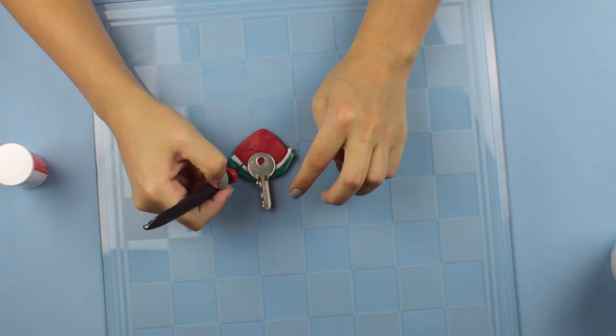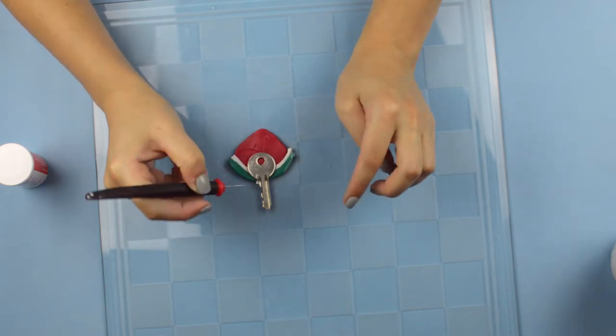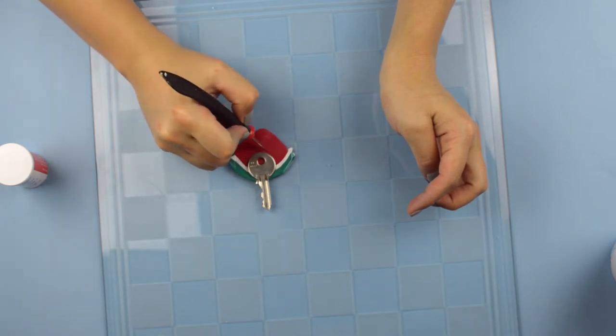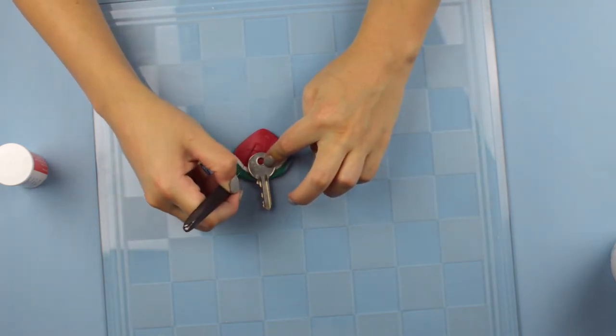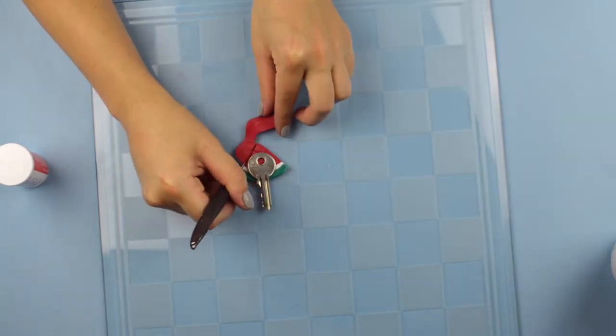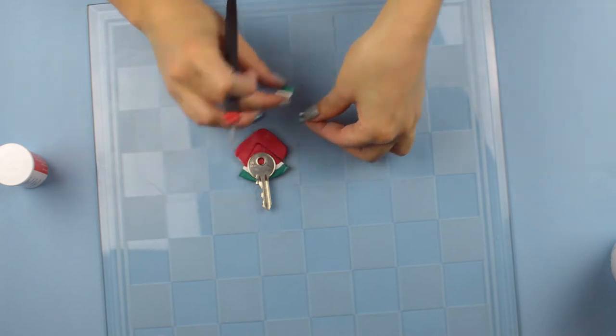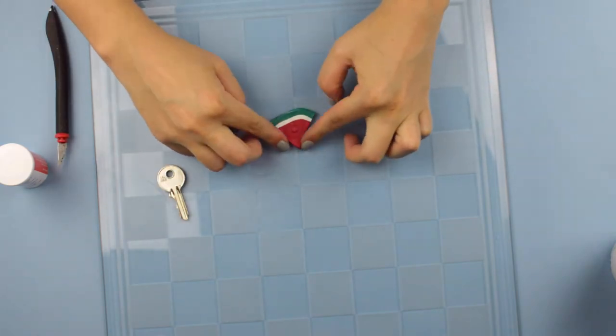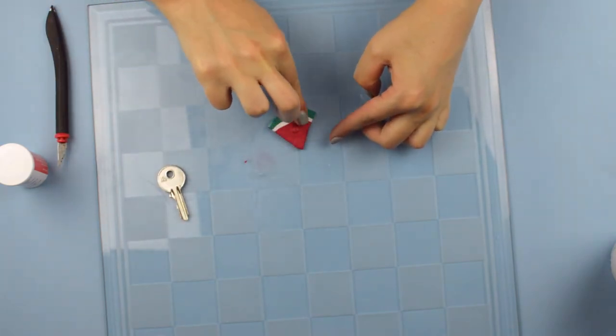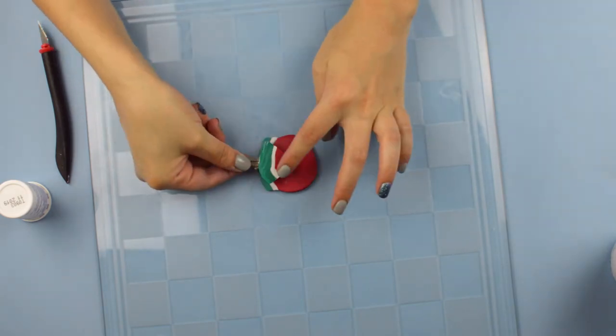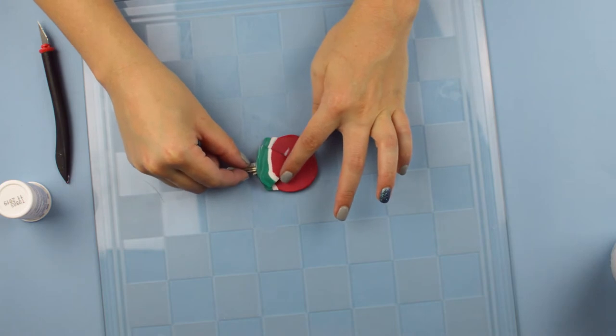Place your key on top and sketch your design. In this case to simulate a watermelon it's just a simple triangle and cut the excess. Press the edges a little bit with your finger to soften them up. And because this is a key cover you're gonna need to make another one to cover the other side of the key.